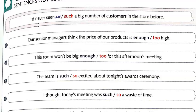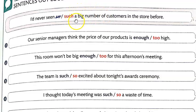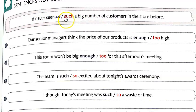So let's look at the example: 'I'd never seen...' We have the choice between so and such: 'a big number of customers in the store before.' There's a clue right here that it is going to be 'such' — you see an adjective and then a noun. That's why it cannot be 'so.' You can't say 'I'd never seen so a big number of customers.' The correct answer is 'I'd never seen such a big number of customers in the store before.'